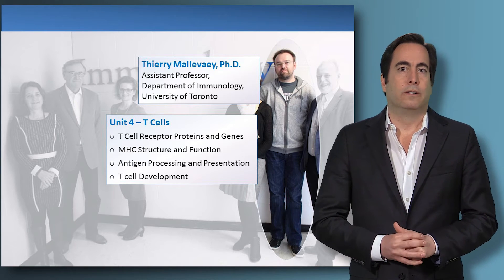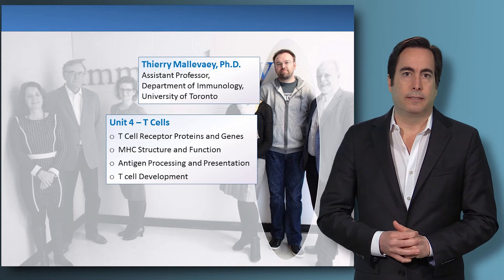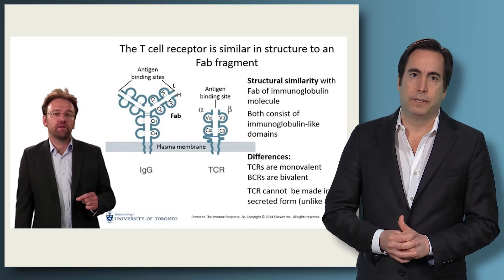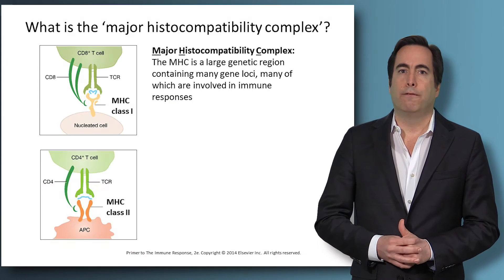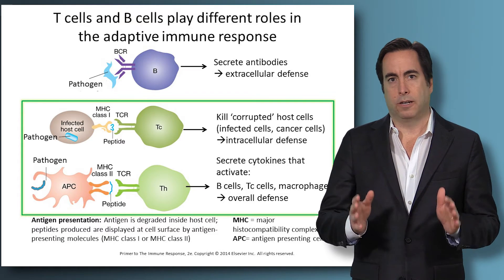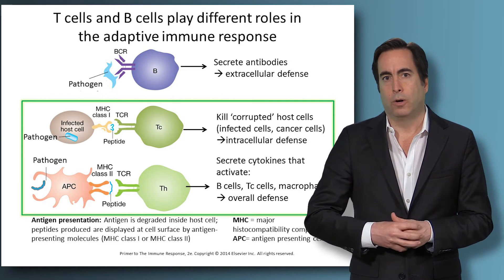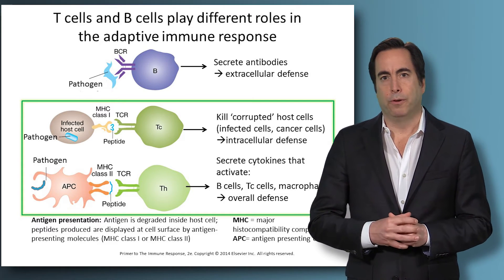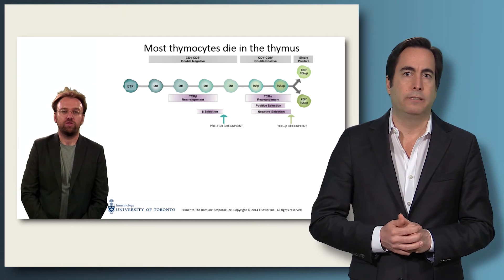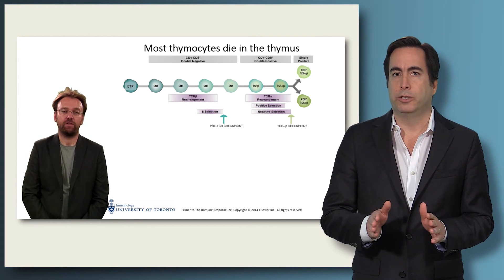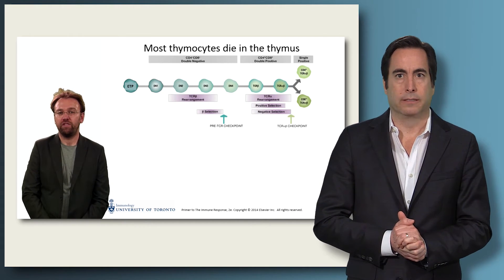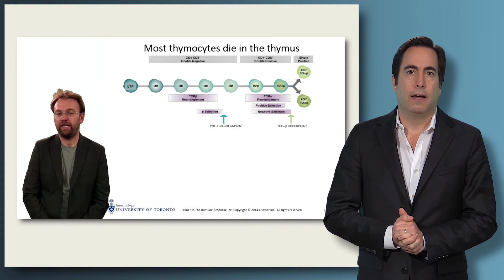In Unit 4, Dr. Thierry Malave discusses the T lymphocytes of the adaptive immune system. He describes the structure of the T cell antigen receptor and the form of antigen recognized by the two main T cell subsets, namely cytotoxic T cells that kill infected host cells and helper T cells that activate other immune cells. In his final lecture, Dr. Malave explains how T cells that can react against our own cells and tissues are usually eliminated, so we avoid autoimmune diseases such as type 1 diabetes and multiple sclerosis.